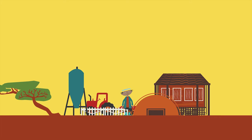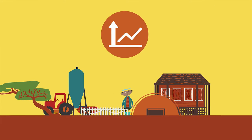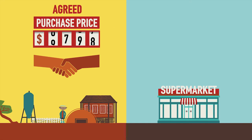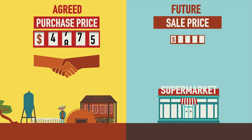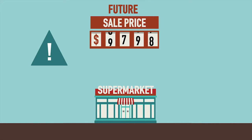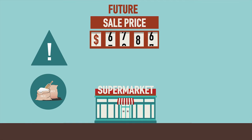Agribusinesses expose themselves to price risk when they either agree a purchase price for an agricultural commodity from farmers, middlemen, or other traders without an agreed sale price, as the price could fall before they come to sell the commodity,